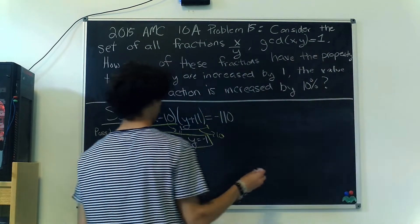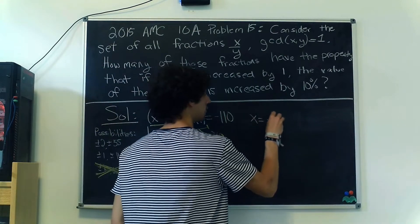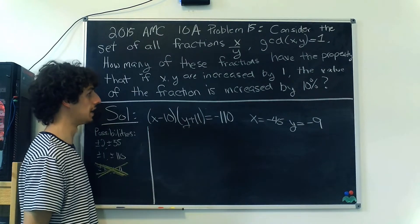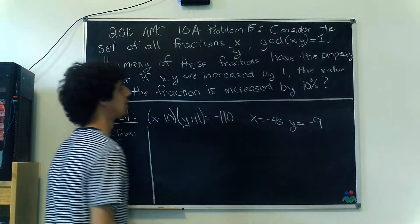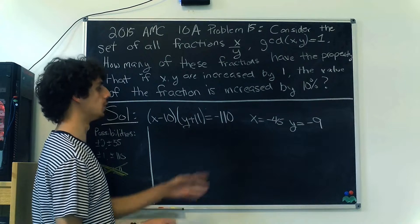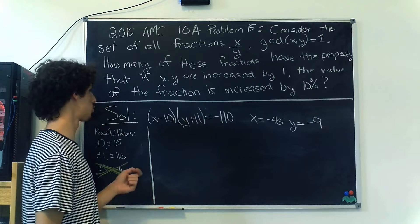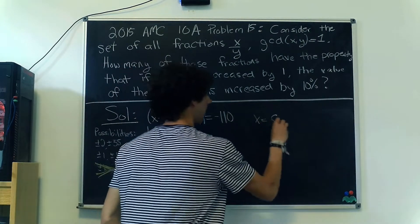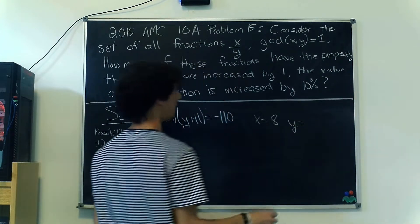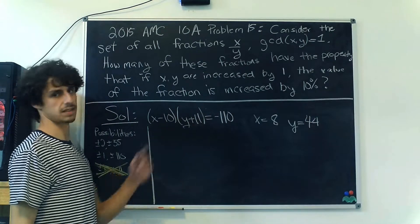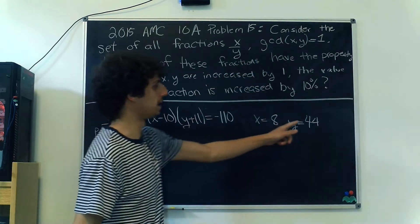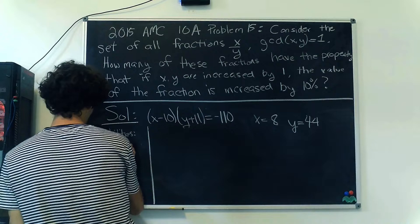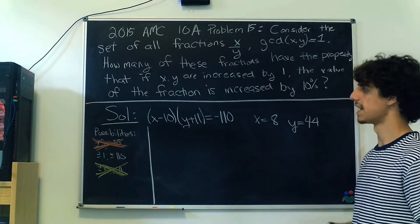Let's try +2 and -55. We want x to be -8, and y to be 44. That gives us -55 here and 2 here. But this ordered pair does not satisfy the condition of GCD(x,y) = 1, because 9 is a factor of 45. For -2 and +55, x = 8 and y = 44. But both 8 and 44 are divisible by 4, meaning their GCD is not 1. So this factorization doesn't give us a solution either.